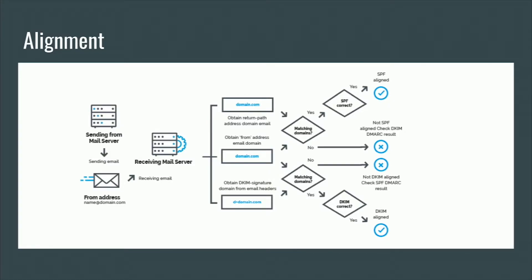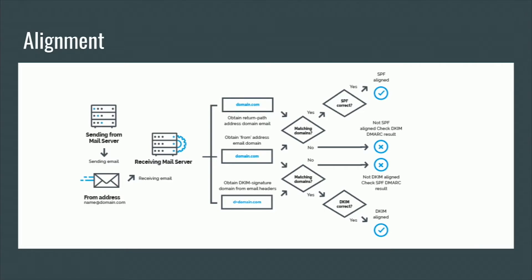So how does DMARC actually work? A message gets sent to the receiving mail server. What DMARC does is it takes the domain from the return path — or the from part of the envelope — and it compares it to the from part of the internet message itself. If those two domains match, then SPF is aligned and it will get a pass from DMARC. The same for DKIM — it will check the D= part of the DKIM header, and if that matches the from address in the message itself, that one will be aligned and DMARC will get a pass on that.